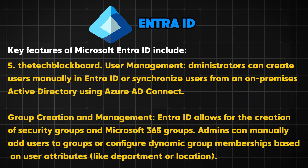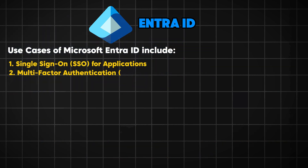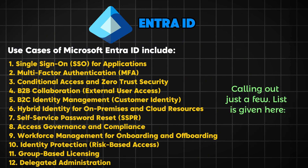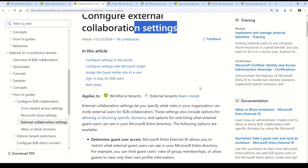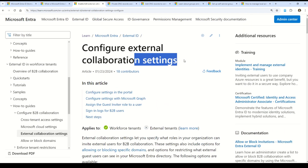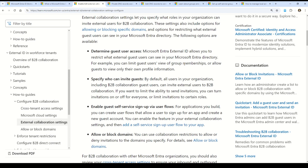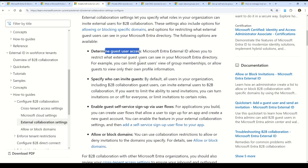Microsoft Entra ID also provides external identities and integration with Microsoft 365. Possible use cases include enterprise businesses, cloud applications, hybrid environments, and developer platforms. In summary, Microsoft Entra ID is a powerful tool for organizations to manage access and identity privileges effectively, ensuring security, compliance, and productivity. Please read the documentation to further understand the external collaboration settings, which is the next key concept in this question.